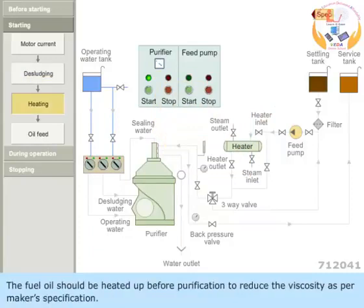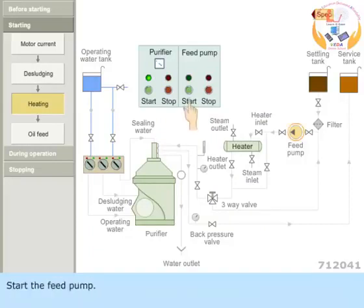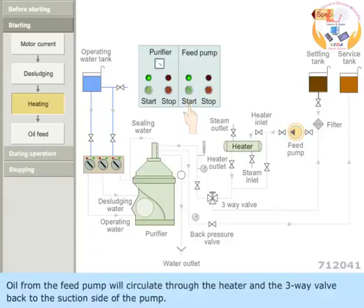The fuel oil should be heated up before purification to reduce the viscosity as per maker's specification. Start the feed pump. Oil from the feed pump will circulate through the heater and the 3-way valve back to the suction side of the pump.